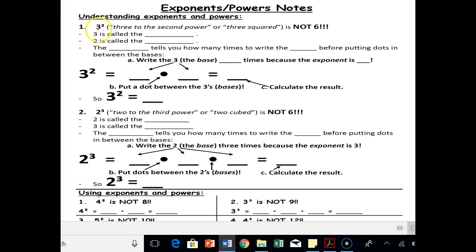If I have something that says 3 to the 2, that says 3 to the second power, or 3 squared. It is not 6. It is not just 3 times 2. So circle that, not 3 times 2. It is 3 times itself, 3 times 3. 3 is called the base number, and 2 is called the exponent. So you have a base of 3 and an exponent of 2.